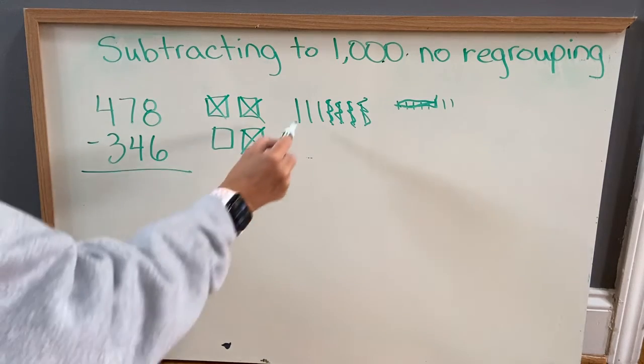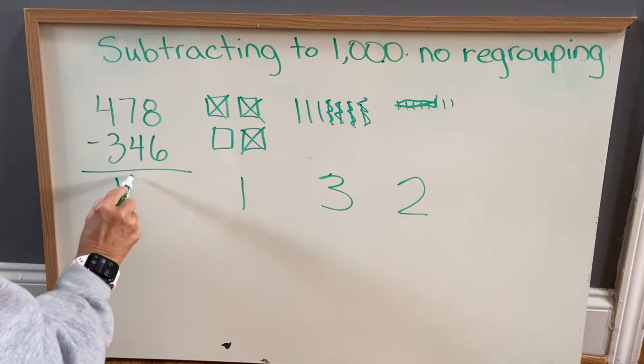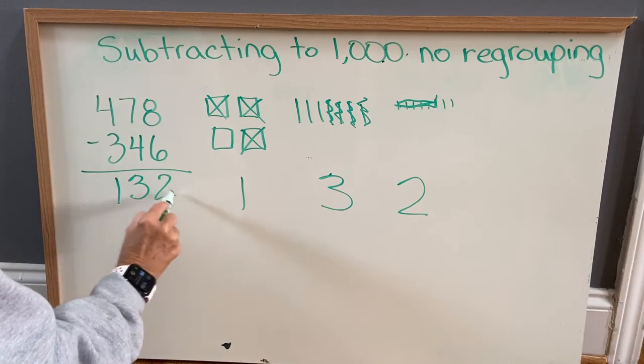One hundred, three tens, two ones. One hundred thirty-two.